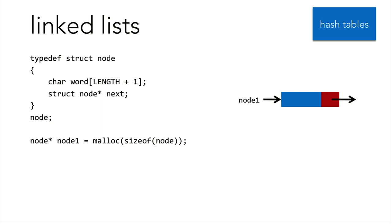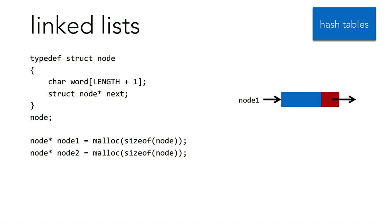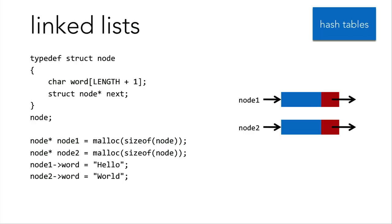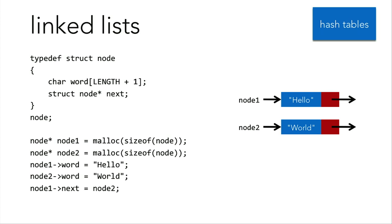Let's make a small linked list. First, you'll want to malloc your node, which creates space in memory the size of your node type. Make another node, again malloc-ing. If you want to assign a value, you might say node1->word equals "hello". This arrow operator dereferences the pointer and accesses the struct's variables — so you don't have to use both the dot and the star operator. Then node2->word equals "world". To make the links, assign node1->next equals node2, pointing node1 to node2. And there we have a linked list.